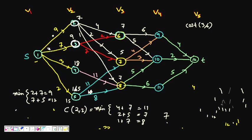From the source, there are four options: via node 2 gives 9+7=16; via node 3 gives 7+9=16; via node 4 gives 3+18=21; via node 5 gives 2+15=17. The shortest path length is 16. The algorithm runs backward through all stages — from node 12 back to node 1 — making it a Θ(|V|+|E|) dynamic programming algorithm.